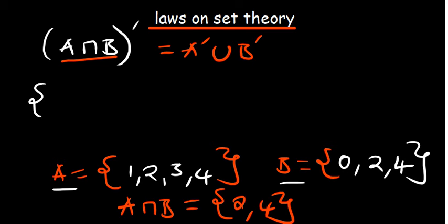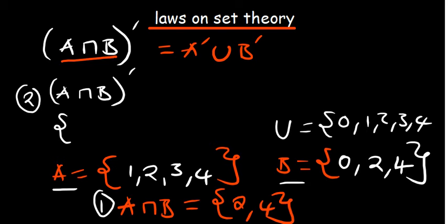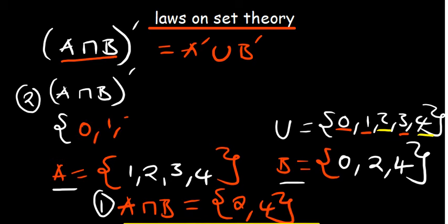Now the complement of A intersection B: assuming our universal set has members 0, 1, 2, 3, 4, the complement means elements not in {2,4} but within the universal set. Excluding 2 and 4, we are left with 0, 1, and 3. That's what we have on the left-hand side.